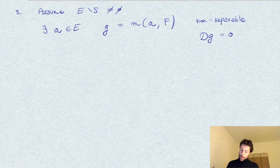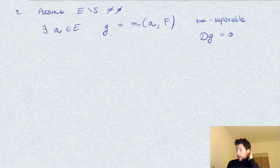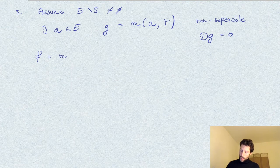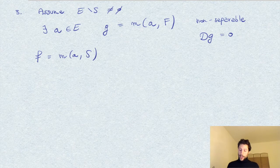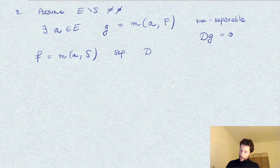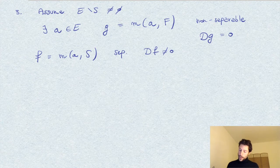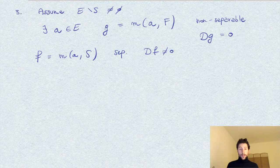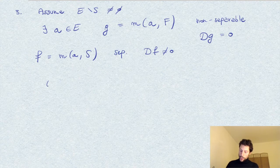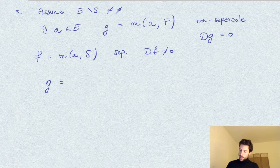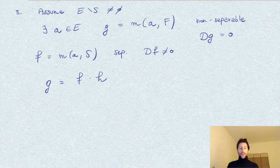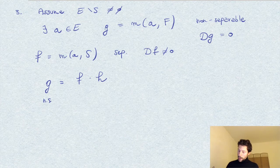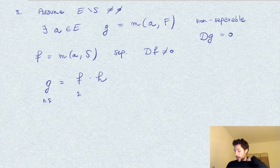On the other hand, if we take, since we know that E over S is separable, the minimal polynomial F of A over S is separable. So, DF, the derivative is not zero. And since F sits inside S, we have that G, so F is a factor of G, say, with another polynomial H. And what we have is that G is non-separable, and therefore H has to be non-separable.